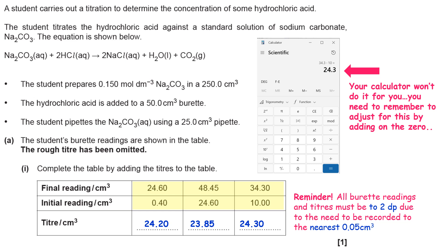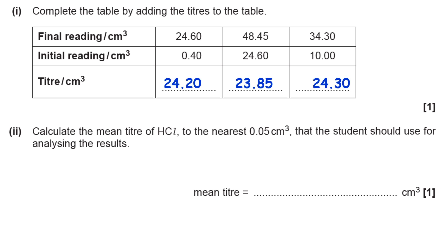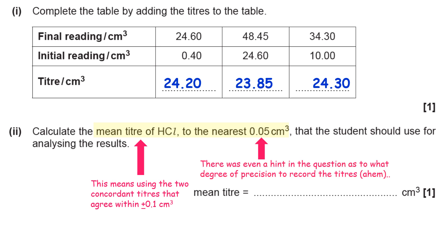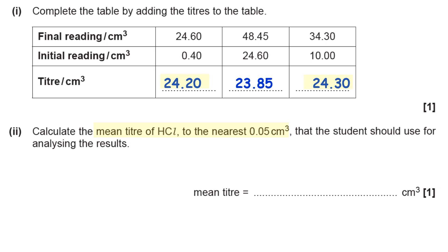Then taking those numbers, they want you to calculate the mean titre of HCl to the nearest 0.05 cm³. Two things to think about here: that means using the two concordant titres that agree within ±0.10 cm³. Obviously the two that we want are 24.20 and 24.30. You ignore the 23.85 because it doesn't agree within 0.1 cm³. So just take those two, add them up, and divide by two, and that gives you 24.25.